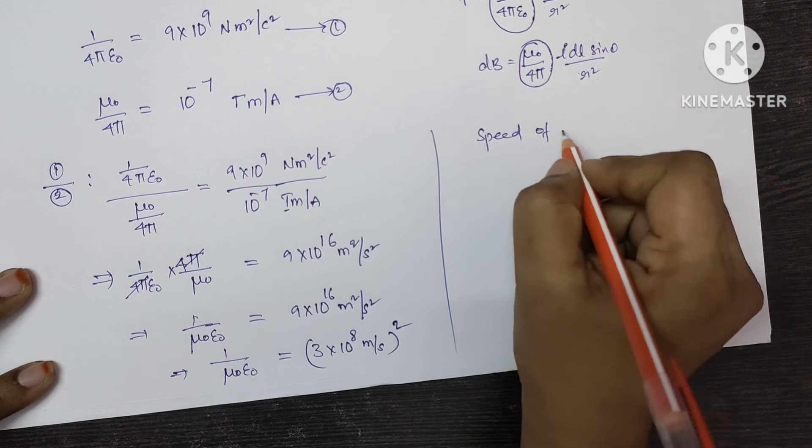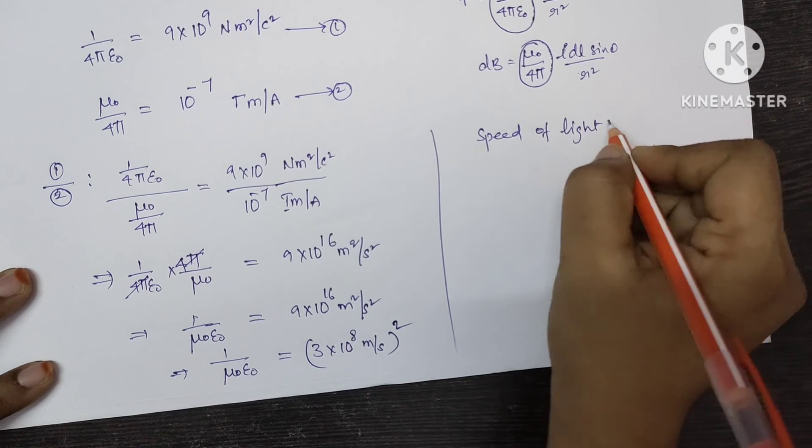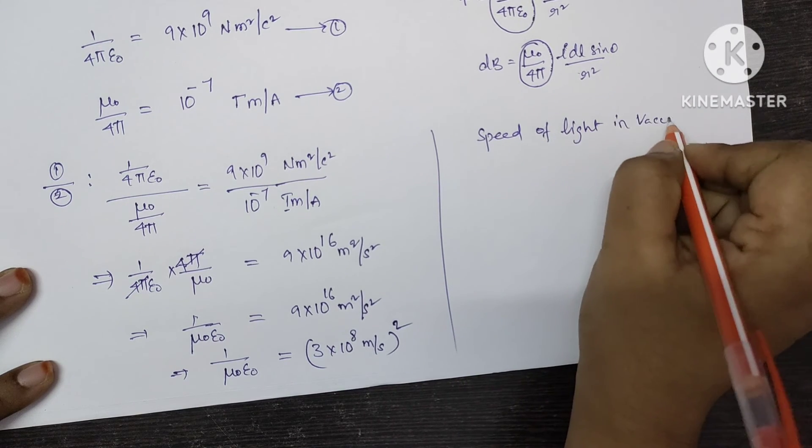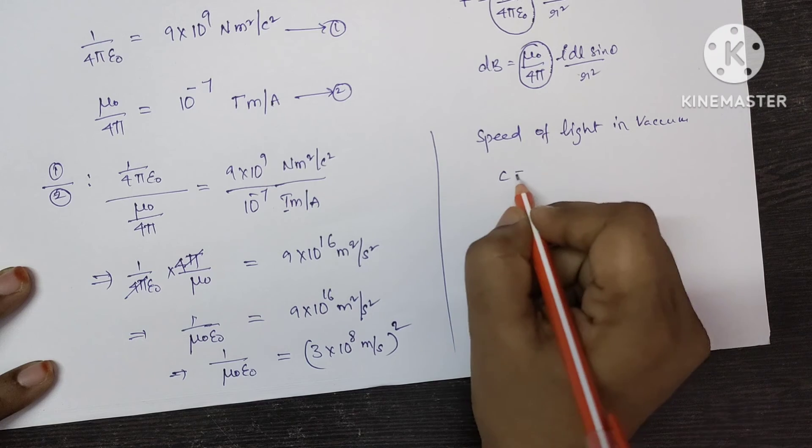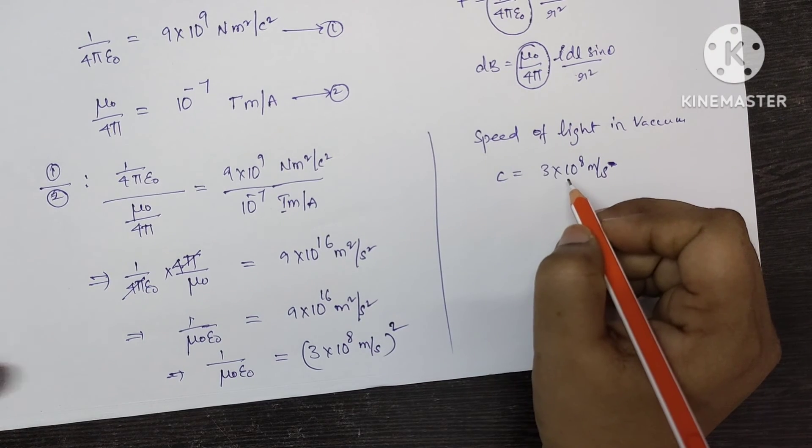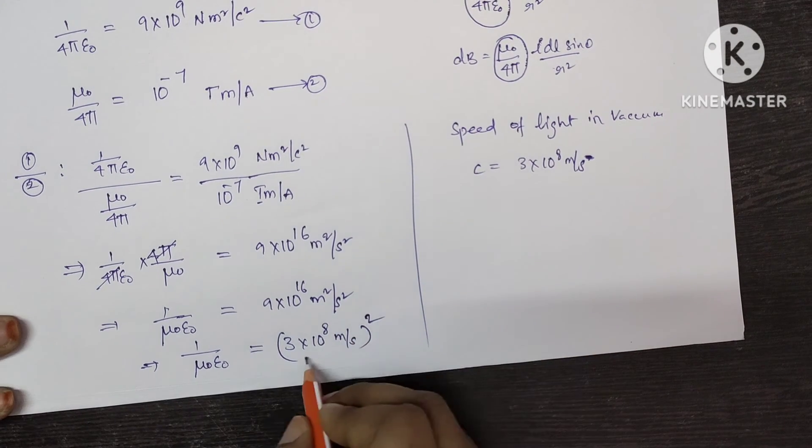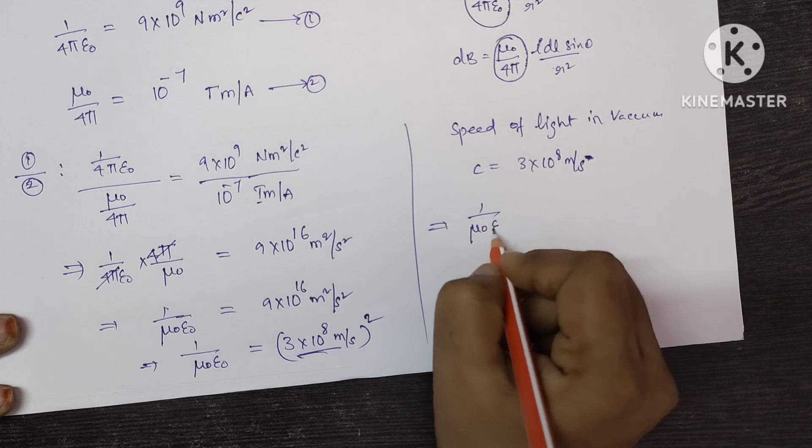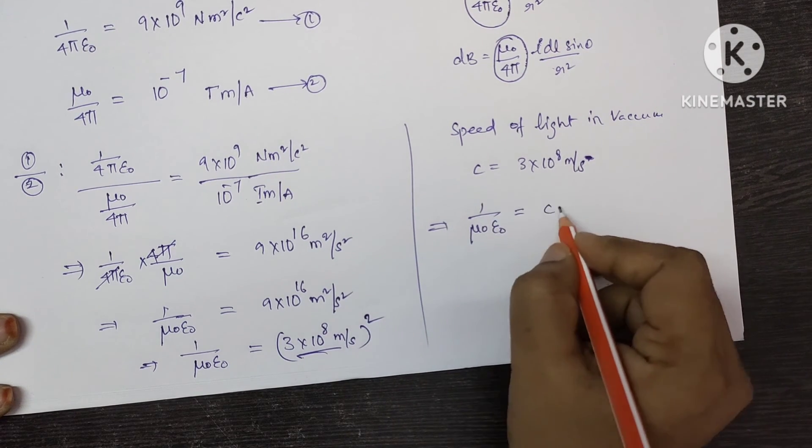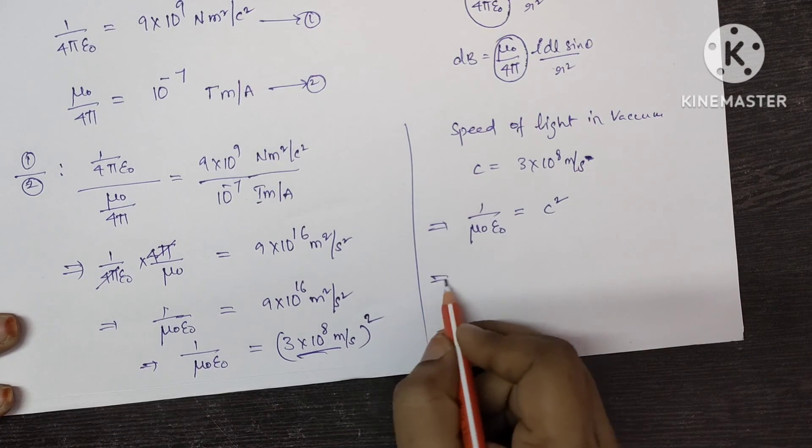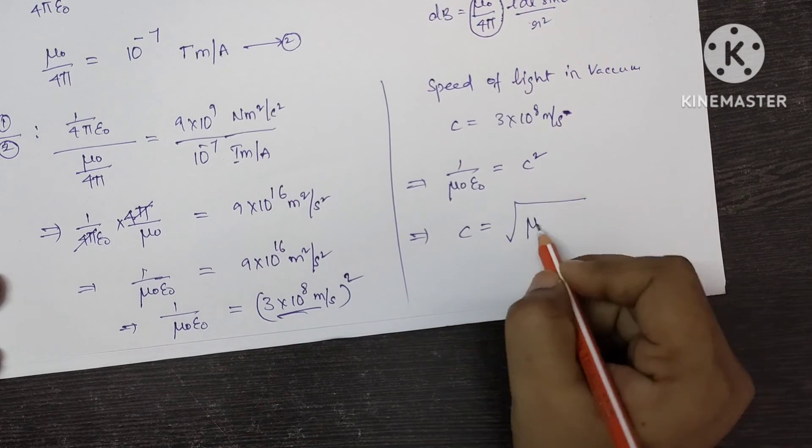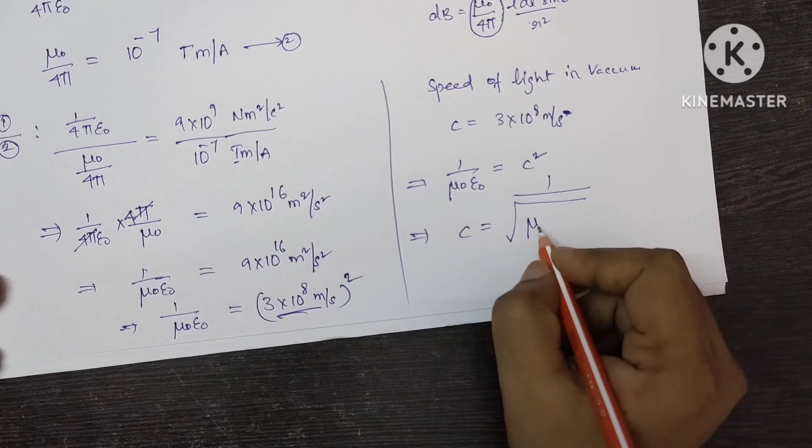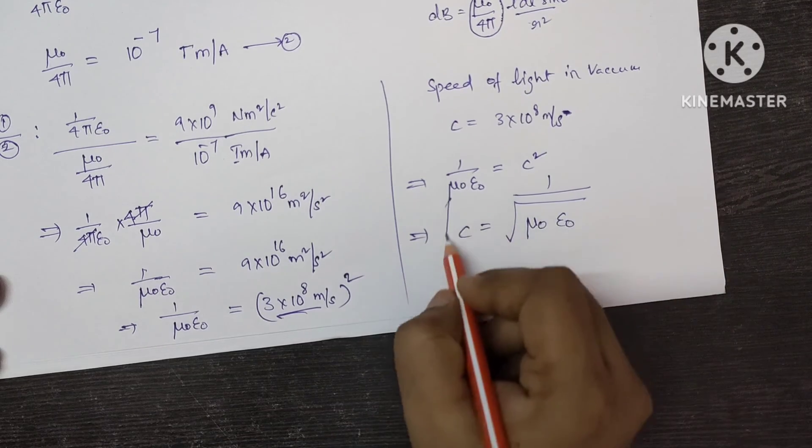We know that speed of light in vacuum c equal to 3 into 10 to the power of 8 meter per second. So substitute the value here. So you will get 1 by mu 0 epsilon 0 equal to c square.